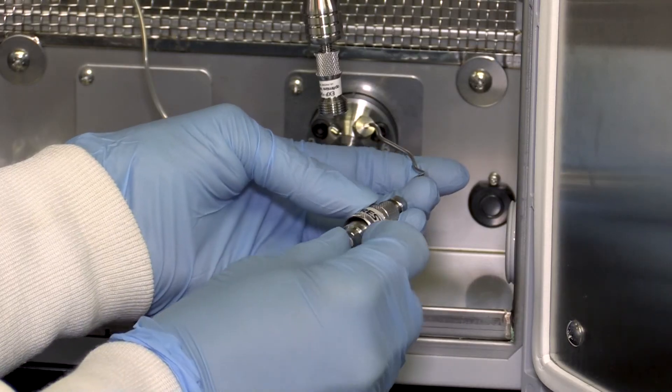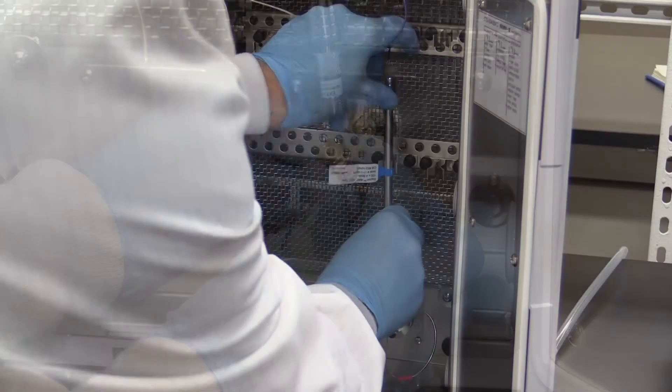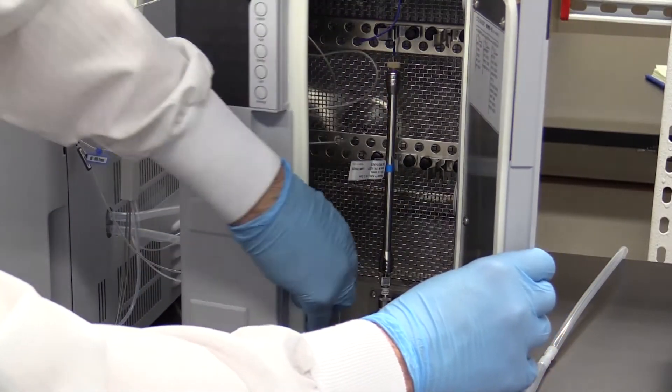For this method, we use a Raptor Arc 18 analytical column and guard cartridge. Place a Raptor Arc 18 EXP guard cartridge into the Direct Connect holder. Once you've established the method according to your lab's validation SOPs, now you're ready to run your samples and collect data.